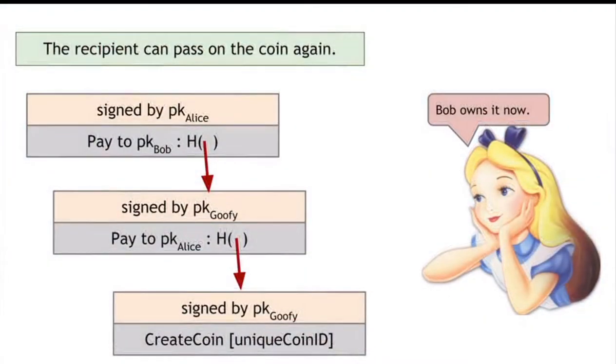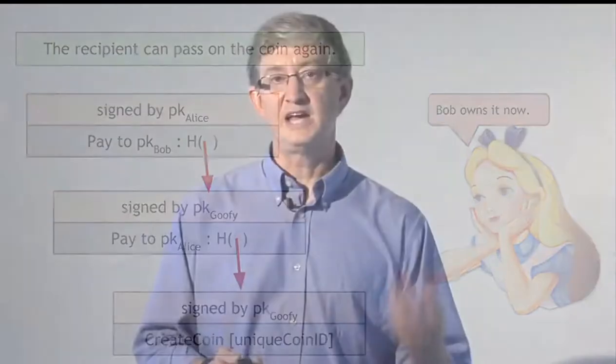Those are all the rules of Goofy coin. Goofy can create new coins by signing a statement that he's making a new coin with a unique coin ID. Whoever owns a coin can pass it on to someone else by signing a statement saying pass on this coin to person X. You can verify the validity of a coin by simply following the chain and verifying all of the signatures along the way.